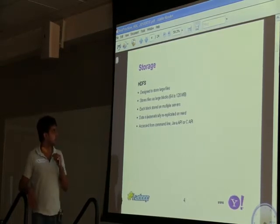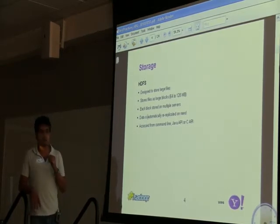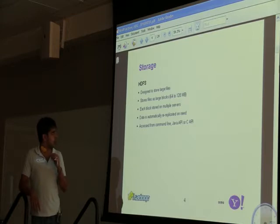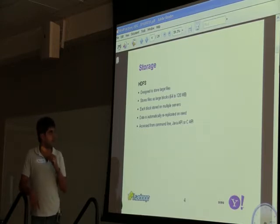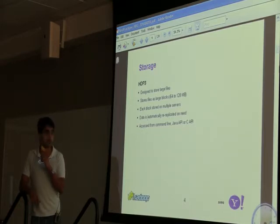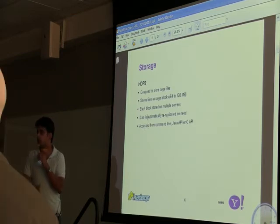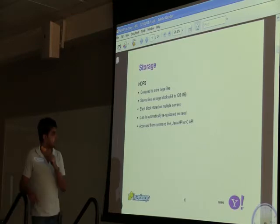HDFS — most of you know this. It's designed to store large files with large block sizes of 64 to 128 megabytes. In fact, at Yahoo we're probably going to 512 megabytes. Each block is stored on multiple servers for redundancy — we call them replicas. Data is replicated; if one of the nodes goes down, we'll replicate them again. For the user interface, you have multiple choices: shell commands, bash scripts, or the Java API or the C API.